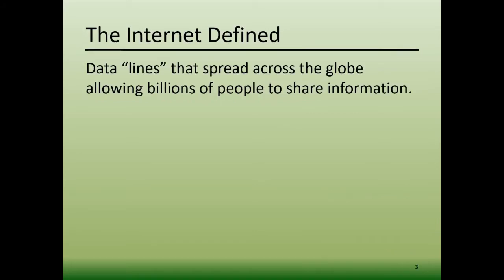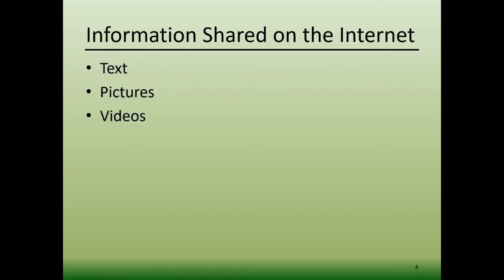Let's begin by covering what the internet is. In general terms, the internet can be defined as data lines that spread across the globe, allowing billions of people to share information. This shared information can take many forms, such as, but not limited to, text, pictures, and videos.